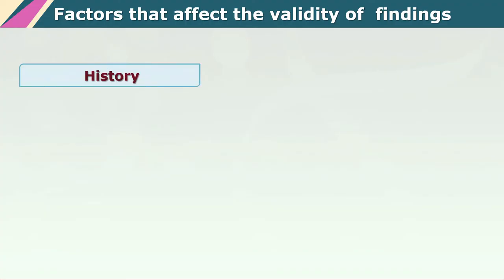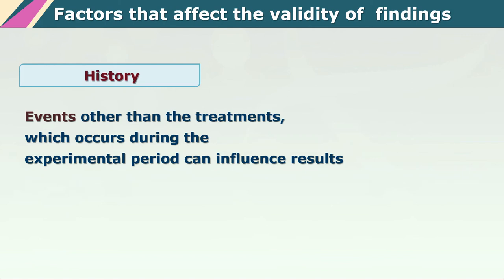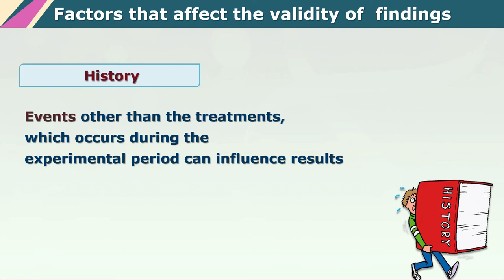We are now going to look at some factors which will actually interfere with our experimental findings. The experimenter or researcher has to be very careful that these factors are not creeping into the experimental design. These are very well known, well-established factors. One important factor is the factor of history — what sort of other events has the subject been exposed to in the course of this experiment that will actually affect them in such a way that their performance on the dependent variable may change.